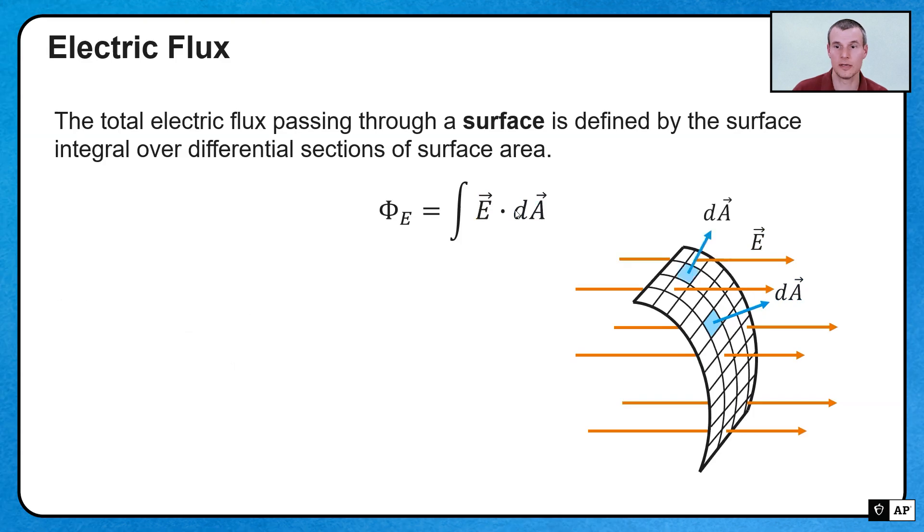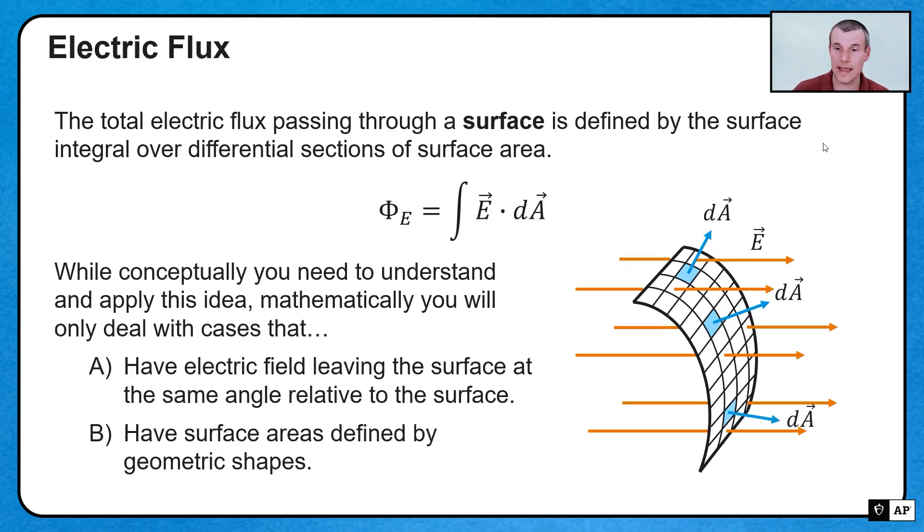If I were to put an angle in there, once again, it would be the angle between the electric field going through and that tiny little area vector. But here's what makes this thing tricky: there's that area element and there's that area element. And depending on which one that I pick, the angles are going to change. So conceptually, you need to understand that the flux going through all those different surfaces is going to have to be the same. But you're only going to work with ones that leave the surface at the same angle, so that this dot product doesn't vary as a function of dA. That's a good thing.